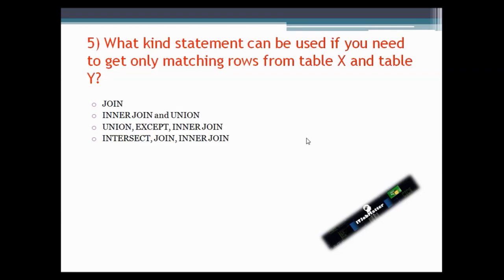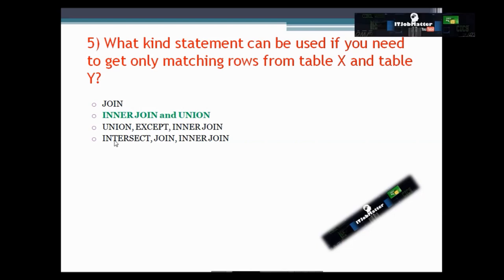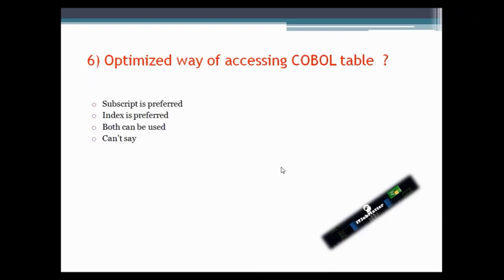This question asks what kind of statement can be used to get only matching rows from table X and table Y. The answer is INNER JOIN. The INTERSECT operation could also have been correct since INTERSECT retrieves common rows from two tables, just like INNER JOIN. However, the fourth option just says 'join,' which could be inner join, outer join, equi join, or non-equi join — and non-equi join is not used for getting matching rows from two tables. So INNER JOIN is the correct answer.